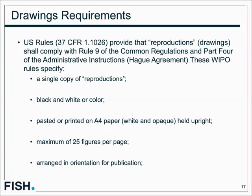Additional application requirements for designation of declared examining offices, which includes the US, require you to provide the identity of the creator or designer, a brief description of the reproduction or characteristic features of the design, and a claim. For those unfamiliar with US design practice, the form of the claim is quite simple — for example, 'the design of a watch as described and shown' is more than sufficient.